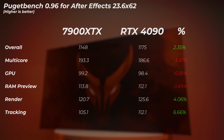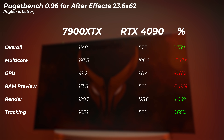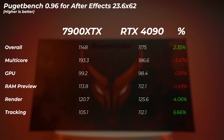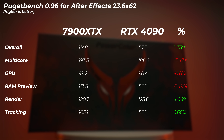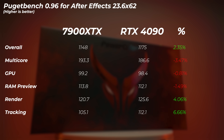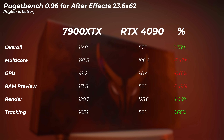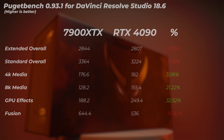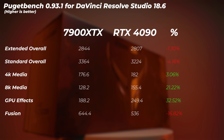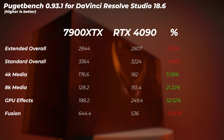Moving on to After Effects: the 4090 is faster in overall performance by about 2.6%. Interestingly though, the multi-core score, GPU score, and RAM preview are all lower on the 4090 as well, so it's not all good news for Nvidia.